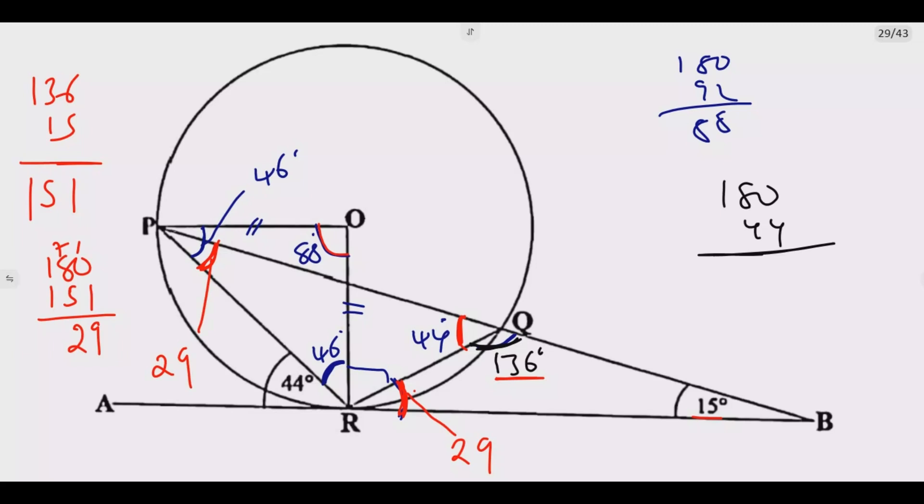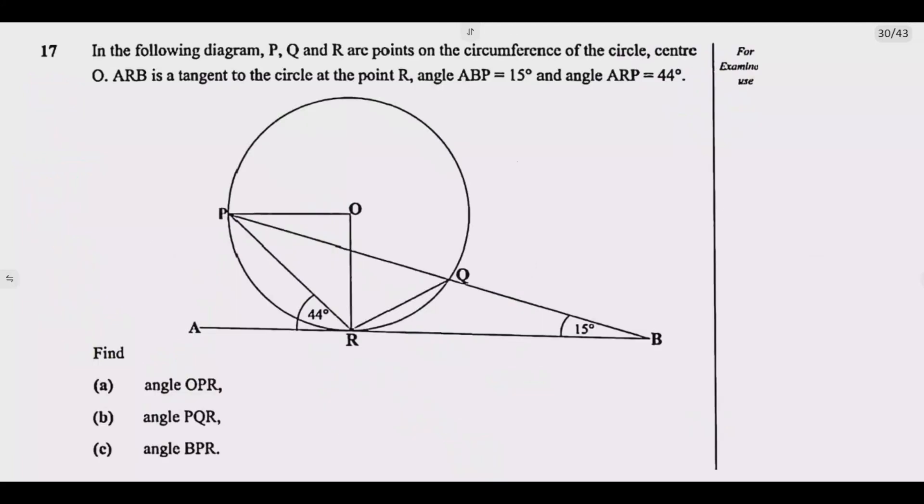If this angle is 29, then I know this angle should also be 29 by an alternative segment. We would have found all the angles here that are necessary. And I know if this is 29, then I can also find this angle. It will be 90 minus 29. This would be 61. So this angle is 61. So you see now I found all the angles.